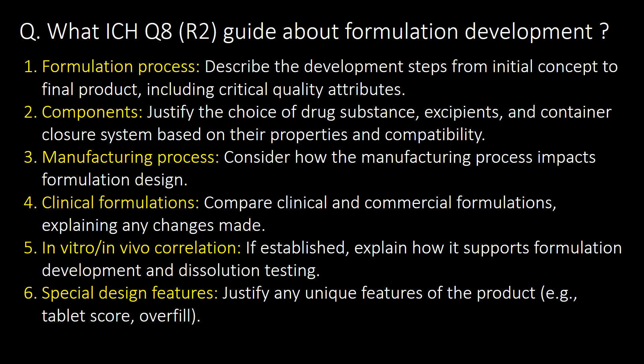What does ICH Q8 R2 guide about formulation development? Describe the development steps from initial concept to final product, including critical quality attributes for components. Justify the choice of drug substance, excipients, and container closure system based on their properties and compatibility. Consider how the manufacturing process impacts formulation design. Compare clinical and commercial formulations explaining any changes made. If in vitro or in vivo correlation is established, explain how it supports formulation development and dissolution testing. Justify any unique features of the product, such as tablet score or overfill.